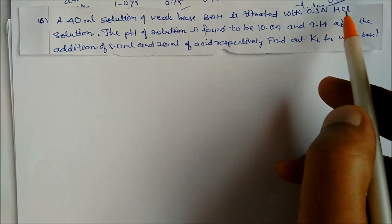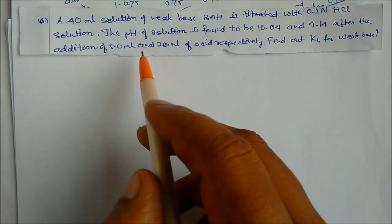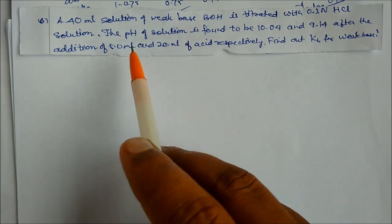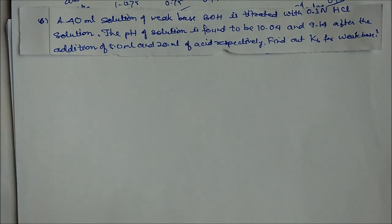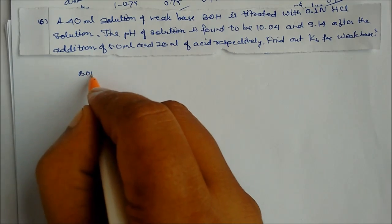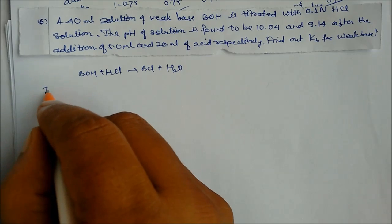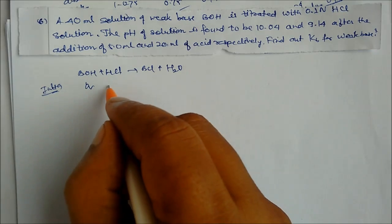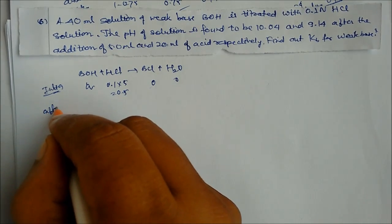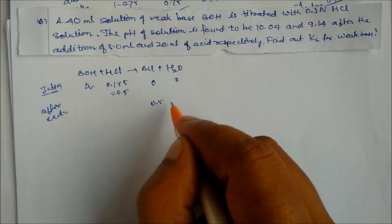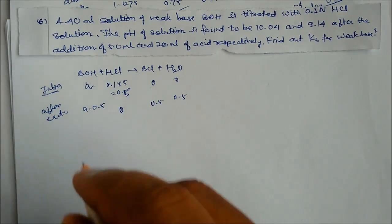Next problem: 20 mL of weak base BOH is titrated with 0.1 N HCl. After addition of 5 mL acid, pH = 10.04; after 20 mL acid, pH = 9.14. Find Kb. Reaction: BOH + HCl → BCl + H₂O. After adding 5 mL: millimoles of HCl = 0.1×5 = 0.5. Let initial millimoles of BOH = a. After reaction: BCl = 0.5, BOH = a−0.5.